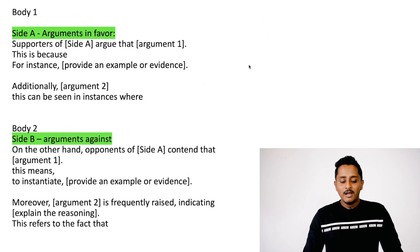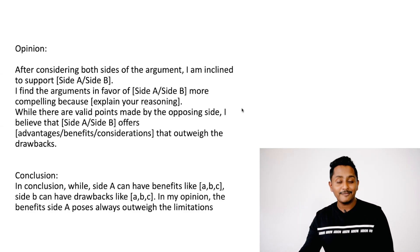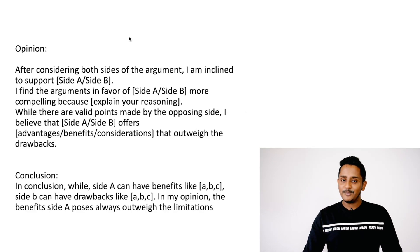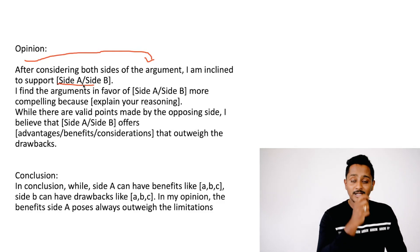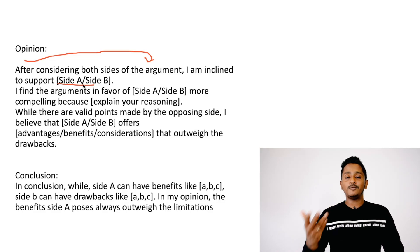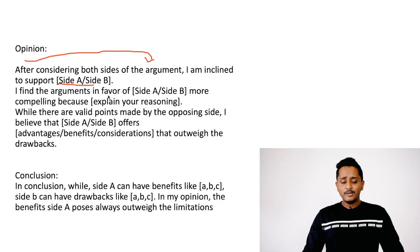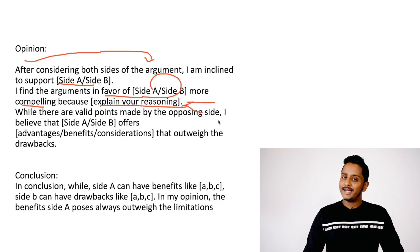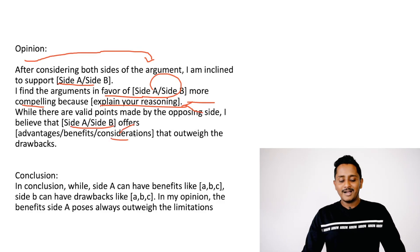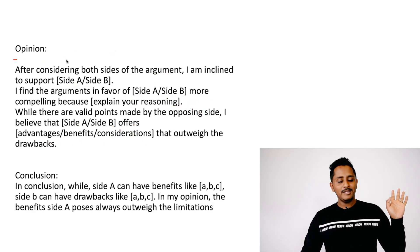Now paragraph four — your opinion. 'After considering both sides of the argument, I am inclined to support...' — one of the sides. 'I find the arguments in favor of...' — topic name — '...more compelling because...' — write a reason. 'While there are valid points made by the opposing side, I believe that...' — topic — '...offers considerations or advantages that outweigh the drawbacks.'